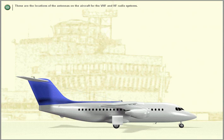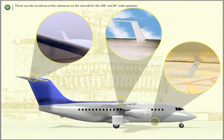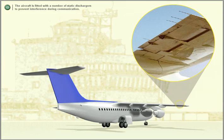These are the locations of the antennas on the aircraft for the VHF and HF radio systems. The aircraft is fitted with a number of static dischargers to prevent interference during communication.